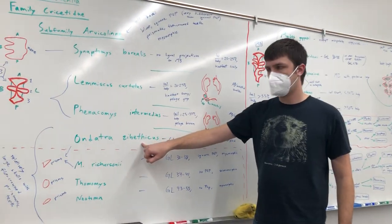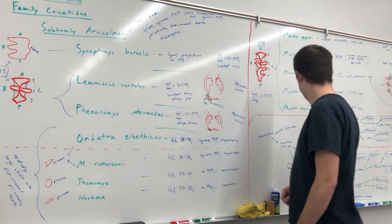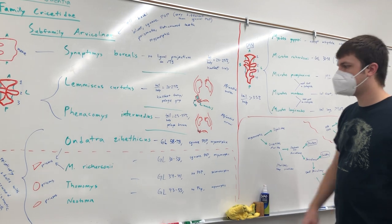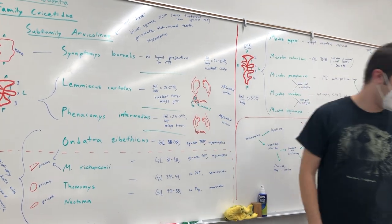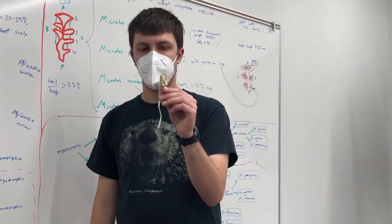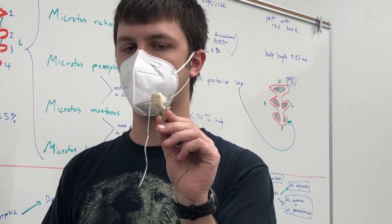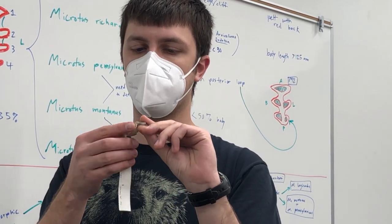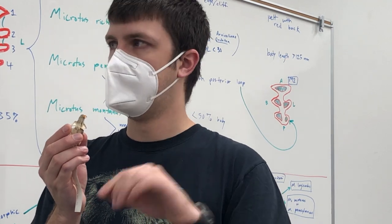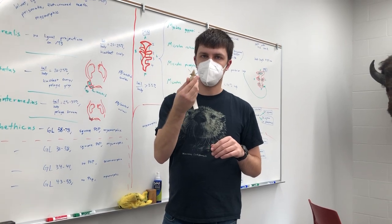And I need to mention Ondatra zibethicus, this one you should probably split off before you look at the teeth, because it's just so big that you should know this is not a regular vole. So even without counting the number of teeth, you should probably split this one off sooner to know, aha, this is the muskrat. Now if it's something small, then worry about the teeth more. You just know, it has vole teeth and it's big.